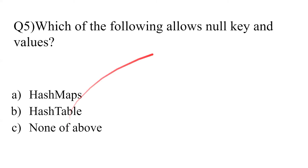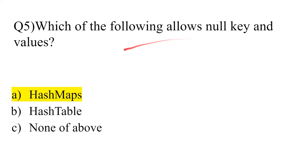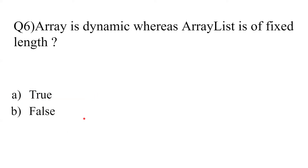Question 5: 'Which of the following allows null key values?' The answer is HashMap. HashMap allows a null key value, whereas Hashtable does not allow null key values.